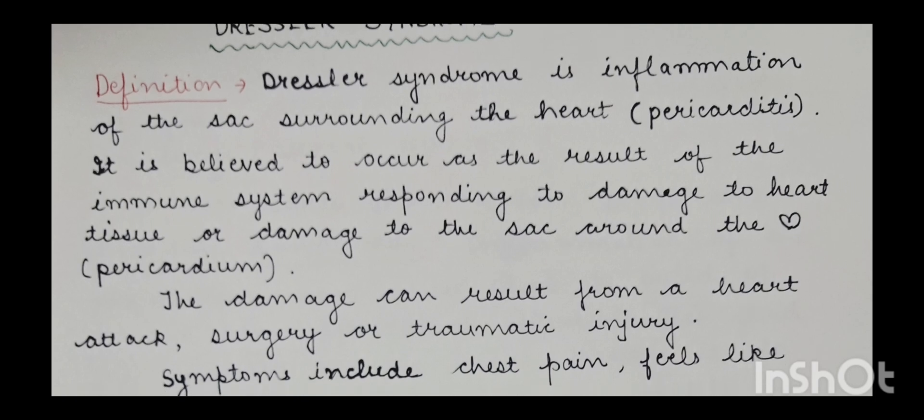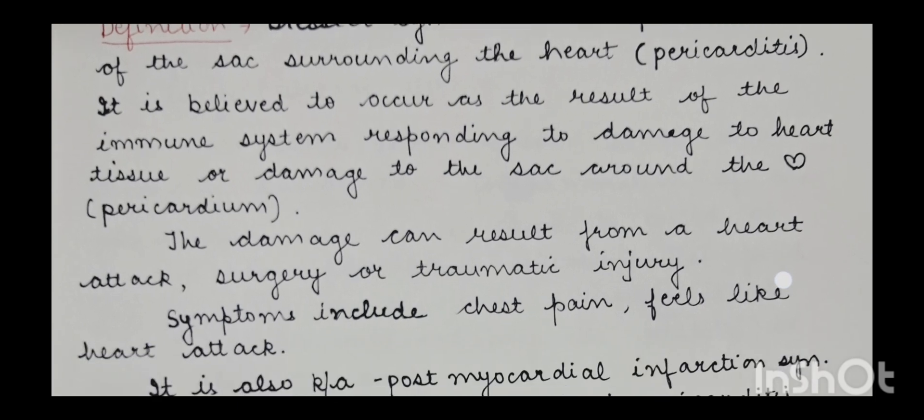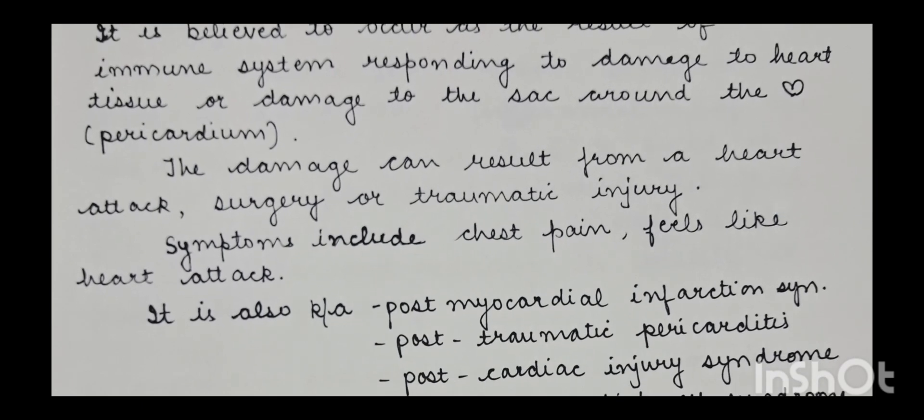Dressler syndrome is believed to occur as a result of the immune system responding to damage to heart tissue or damage to the sac around the heart, the pericardium. Whenever there is infection, injury, or trauma, the immune system reacts to the heart damage. The damage can result from a heart attack, surgery, or a traumatic injury to the sac of the heart.